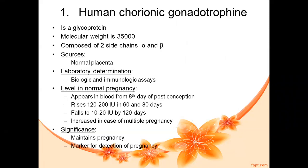The first hormone is human chorionic gonadotropin. HCG is a glycoprotein with a molecular weight of 35,000, and it is composed of two side chains. If you see the structure, there are two side chains: the alpha chain and the beta chain. This is the general structure of HCG.